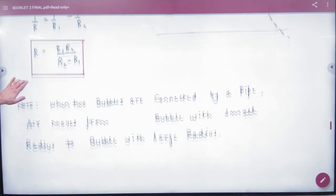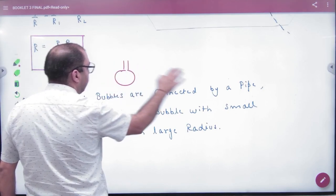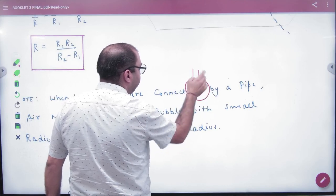There is another important question. If you think there are two bubbles, this is the first bubble, this is the second bubble. This is the pipe. You have connected both pipes.